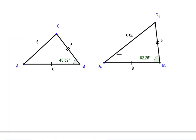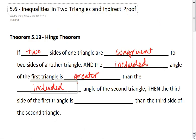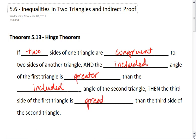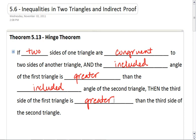We have two sides congruent in the triangles. And one triangle where the included angle is greater than the included angle in the second triangle. Then the third side of that first triangle is greater than the third side in the second triangle.